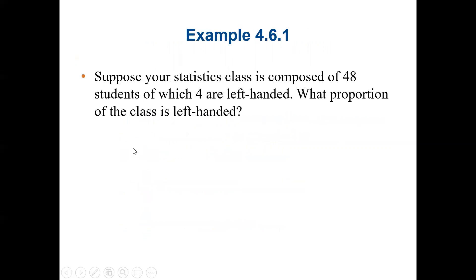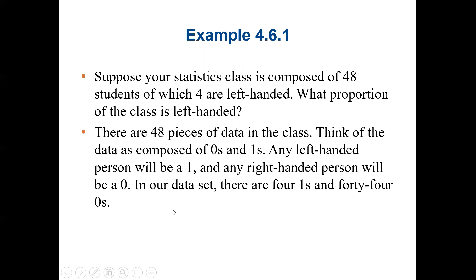Let's see an example. Suppose your statistics class is composed of 48 students, of which four are left-handed. What proportion of the class is left-handed? The left-handed is the characteristic that we're looking for. This means the answer will be 4 divided by 48. Here we say there are 48 pieces of data in the class. Think of the data as composed of 0s and 1s. Any left-handed person will be 1, and any right-handed person will be 0.